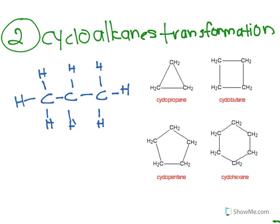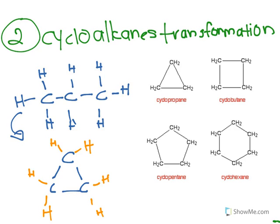The next method is cycloalkanes transformation. Looking at the picture on the right, I have different types of cycloalkanes: cyclopropane, cyclobutane, cyclopentane, cyclohexane. For this molecule with three carbons — just like cyclopropane — I can bend the three-carbon chain to become a triangle. Then add the hydrogens: every carbon only has 4 bonds, so each carbon in the ring gets 2 hydrogens. There you go — your cycloalkane structural isomer.